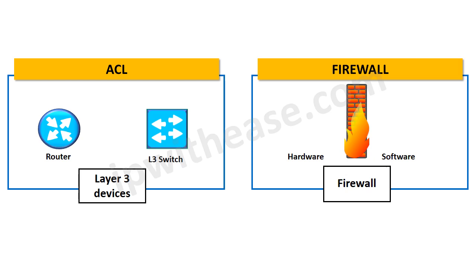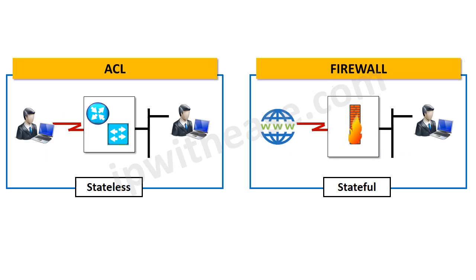First, in terms of asset type, ACL is a feature on layer 3 devices like a Cisco router or firewall, and not any dedicated device. On the other hand, a firewall is a dedicated device or software which performs a multitude of services like traffic filtering, recording and reporting events, and application and identity-based controls, among others.